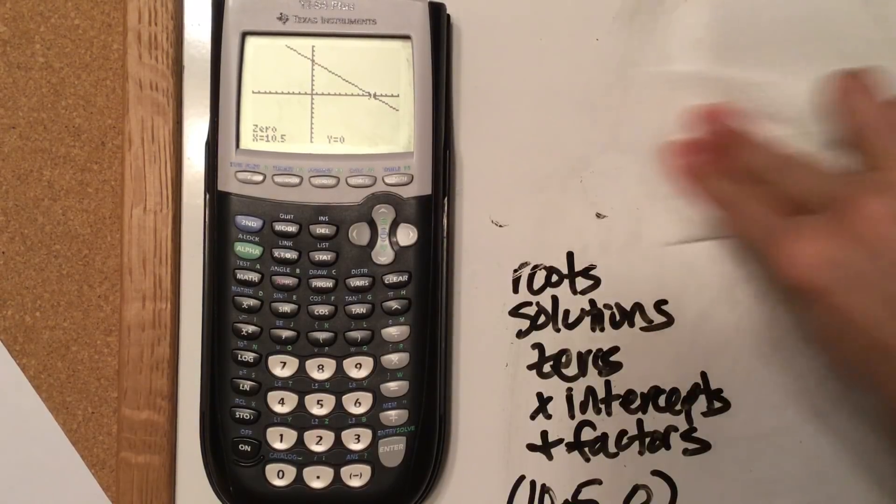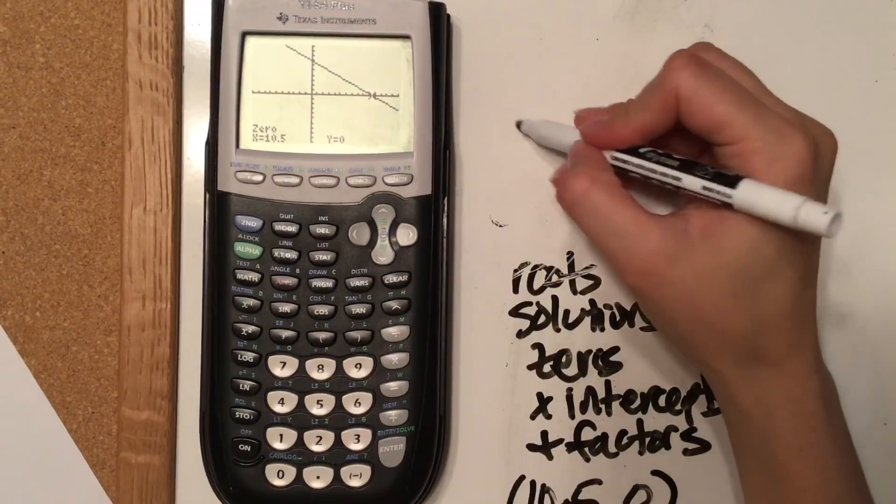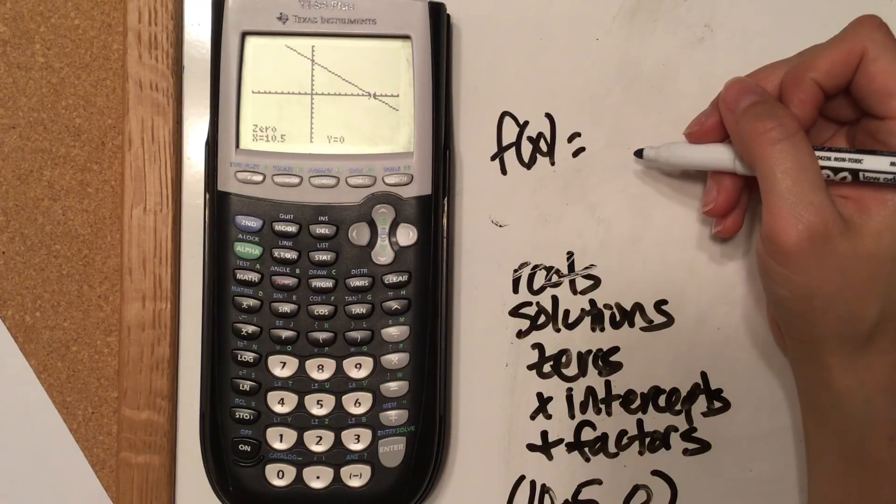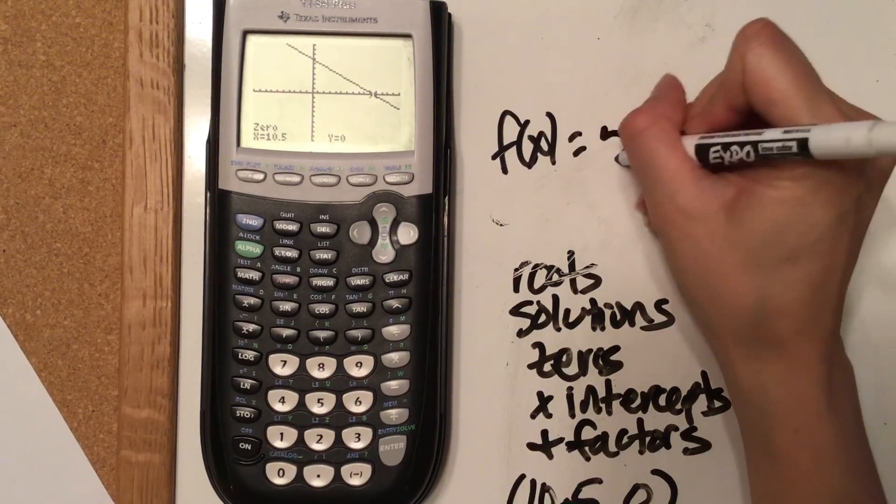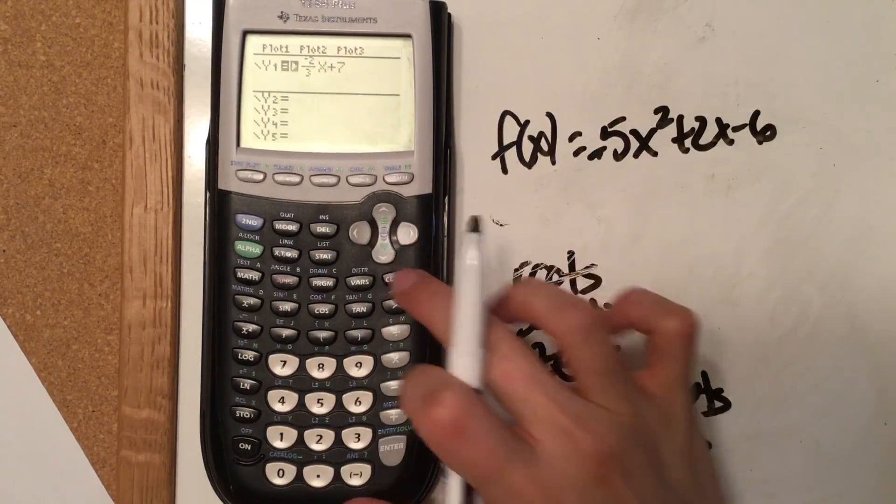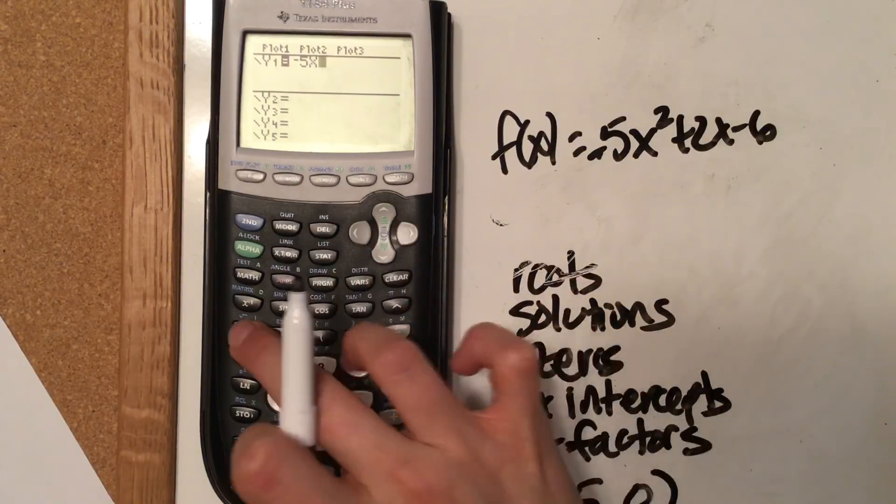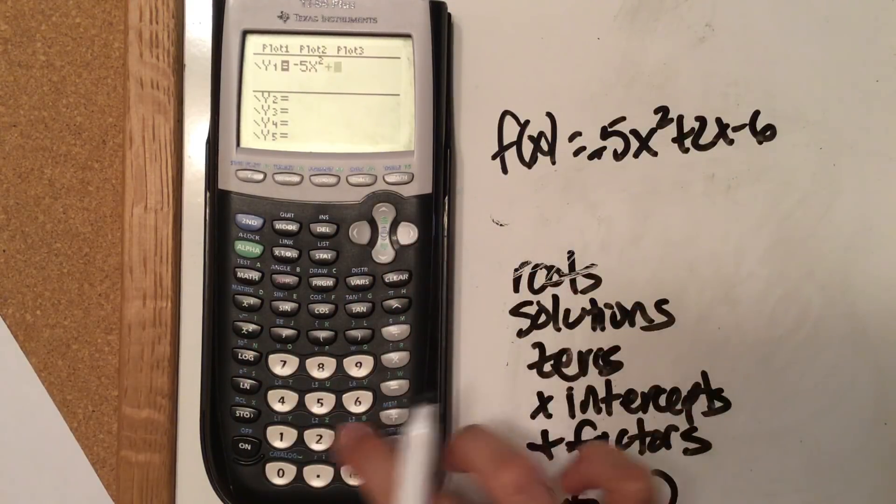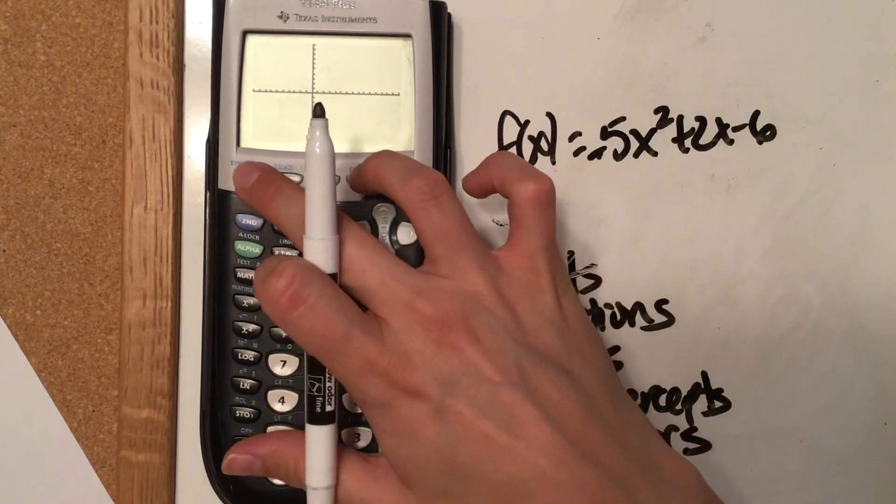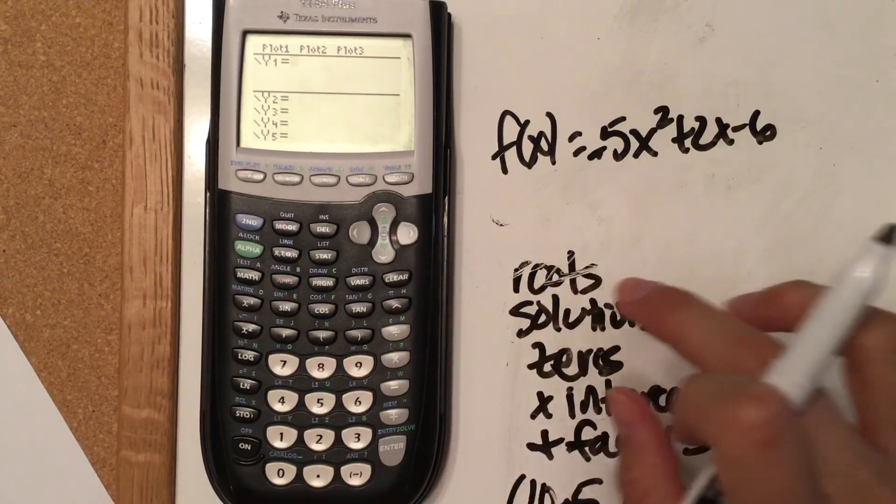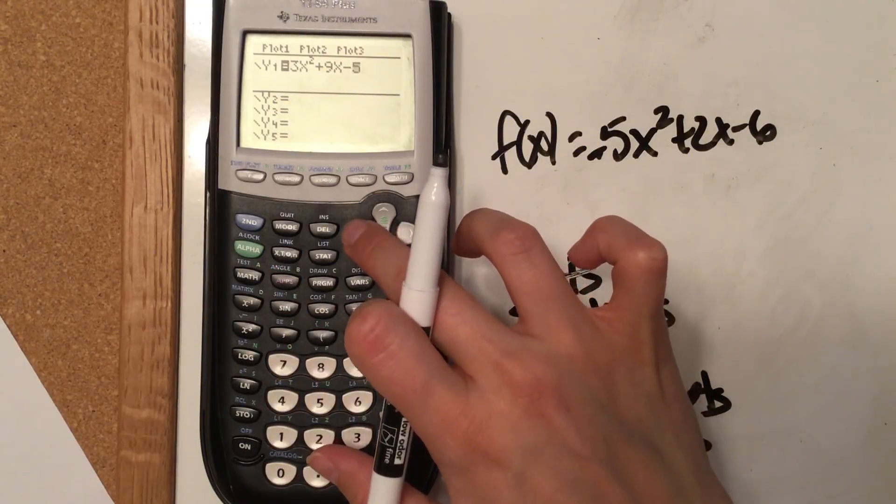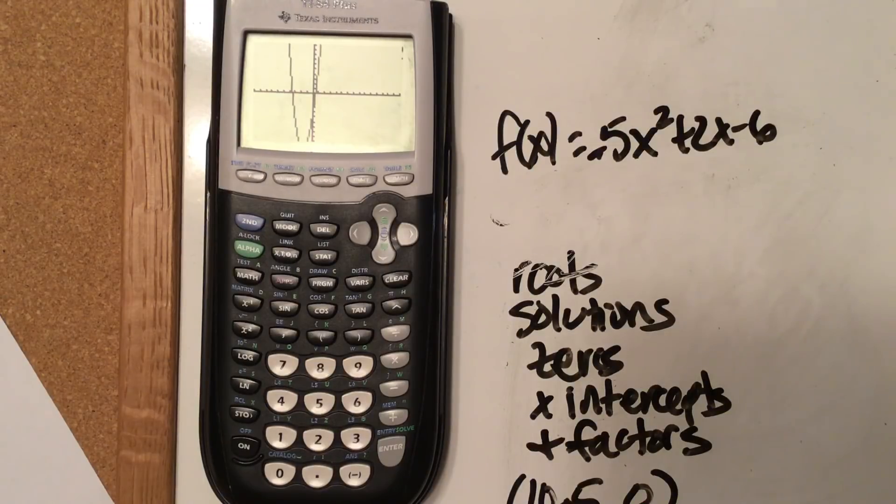Now, if we had a different equation, we're going to look at a quadratic equation. So if we have f of x equals, oh, I don't know where I went. We'll try this one. Negative 5x squared plus 2x minus 6.